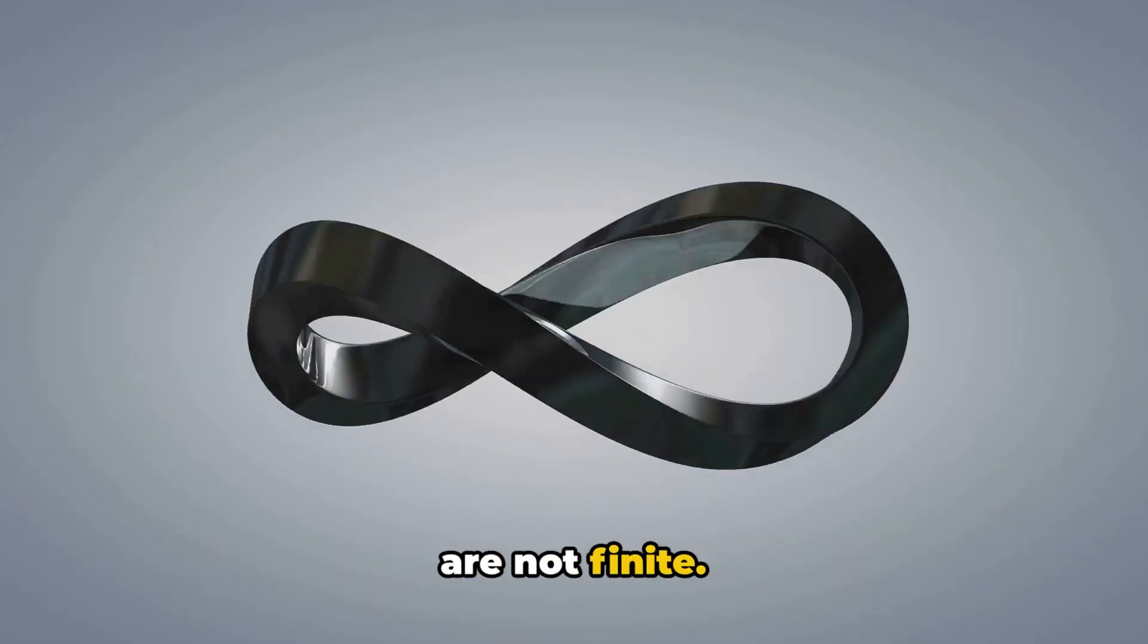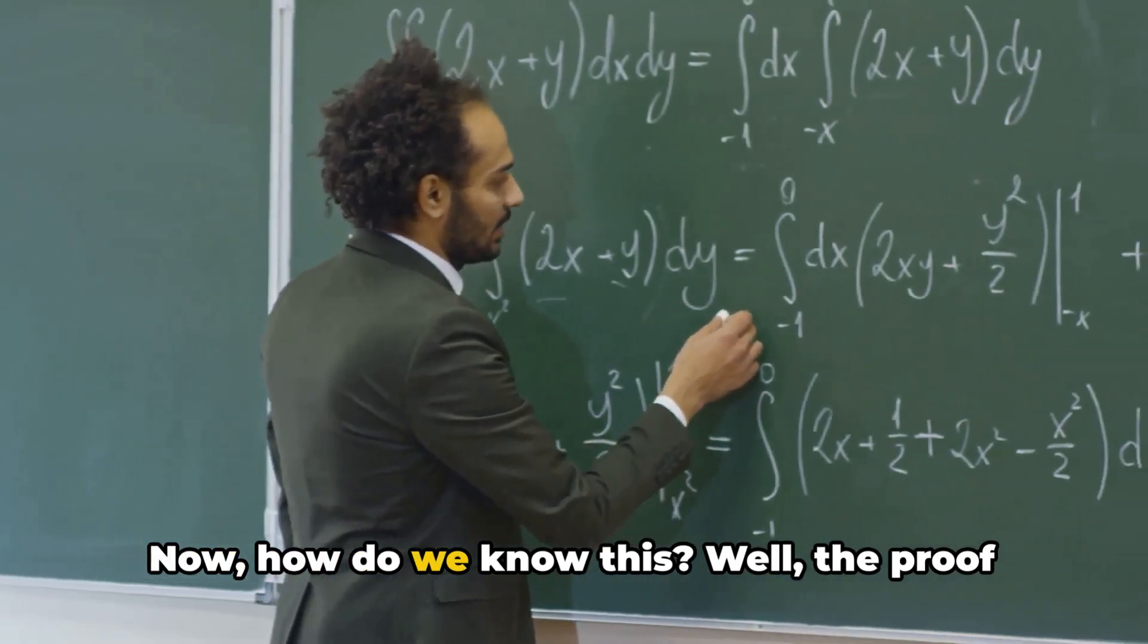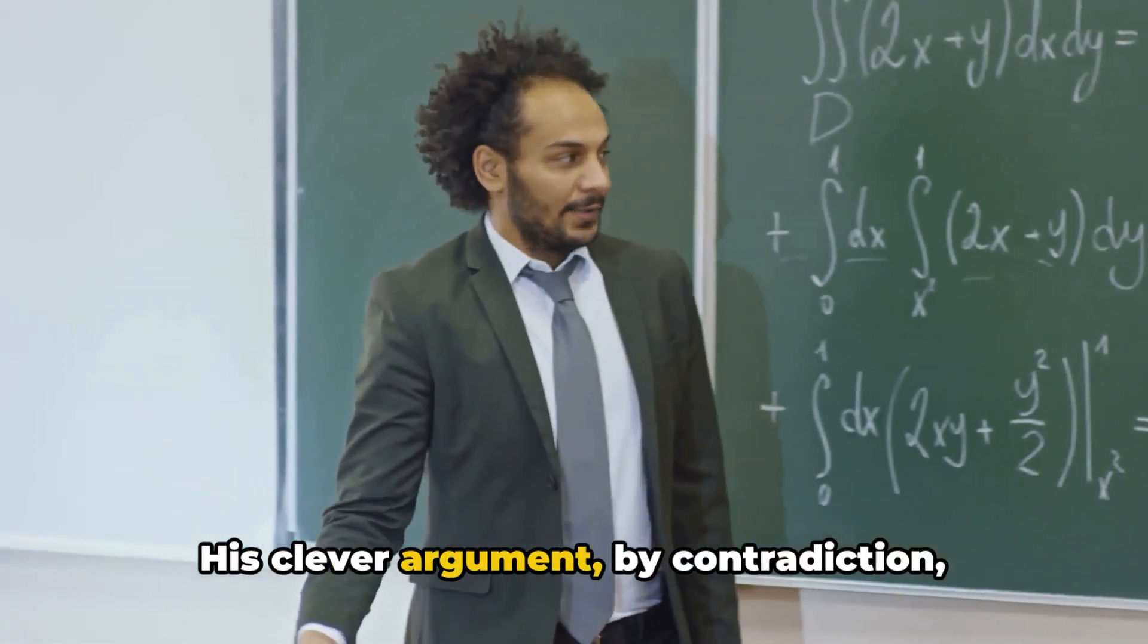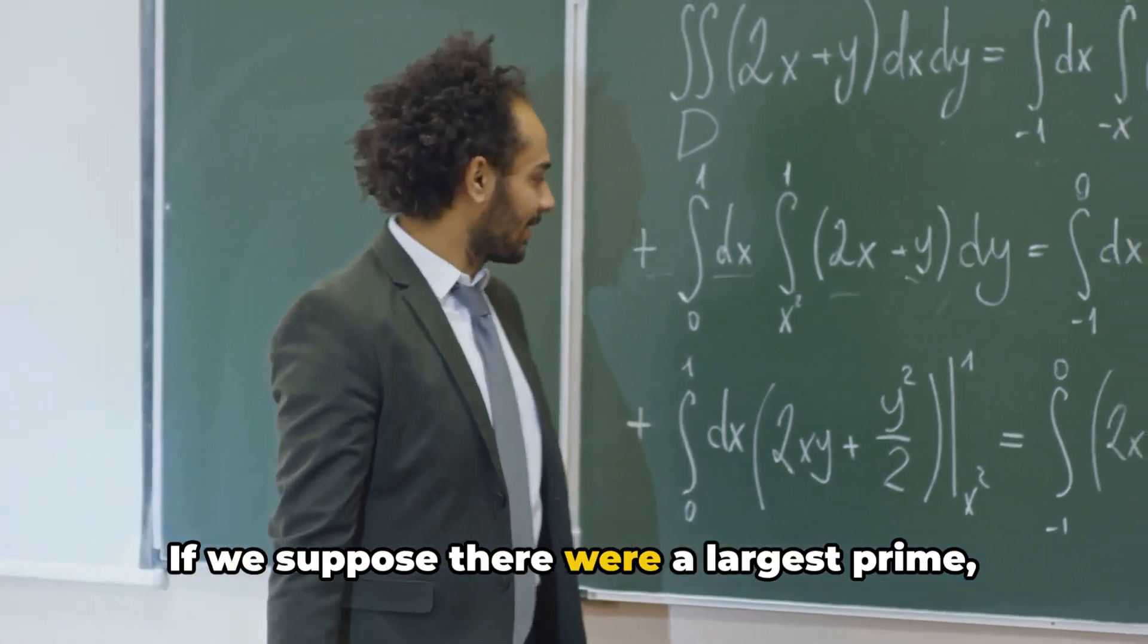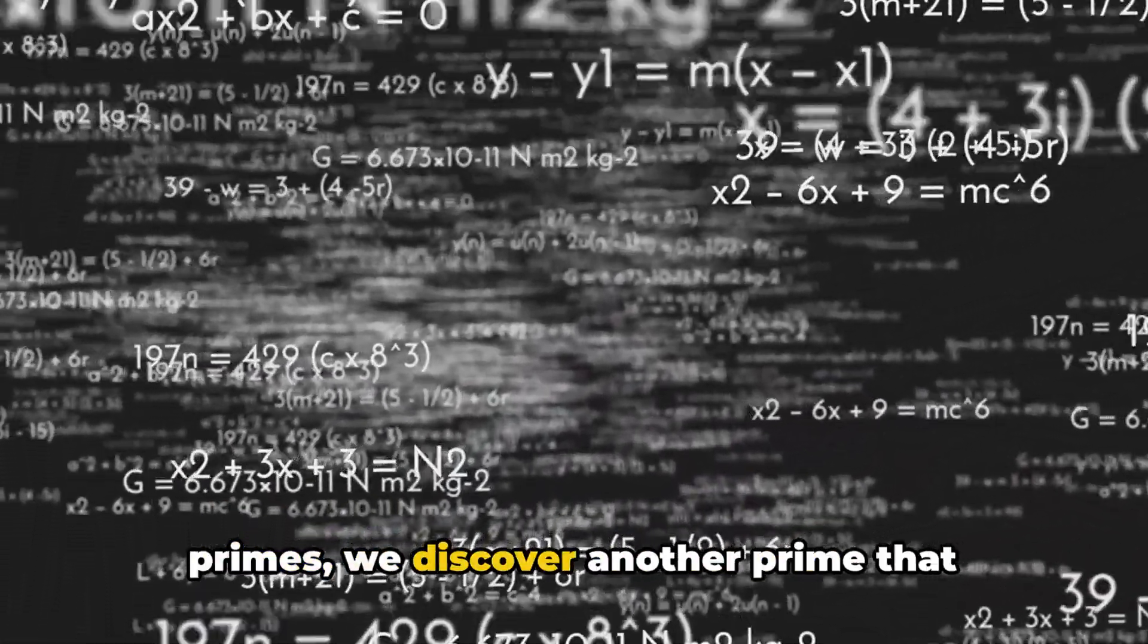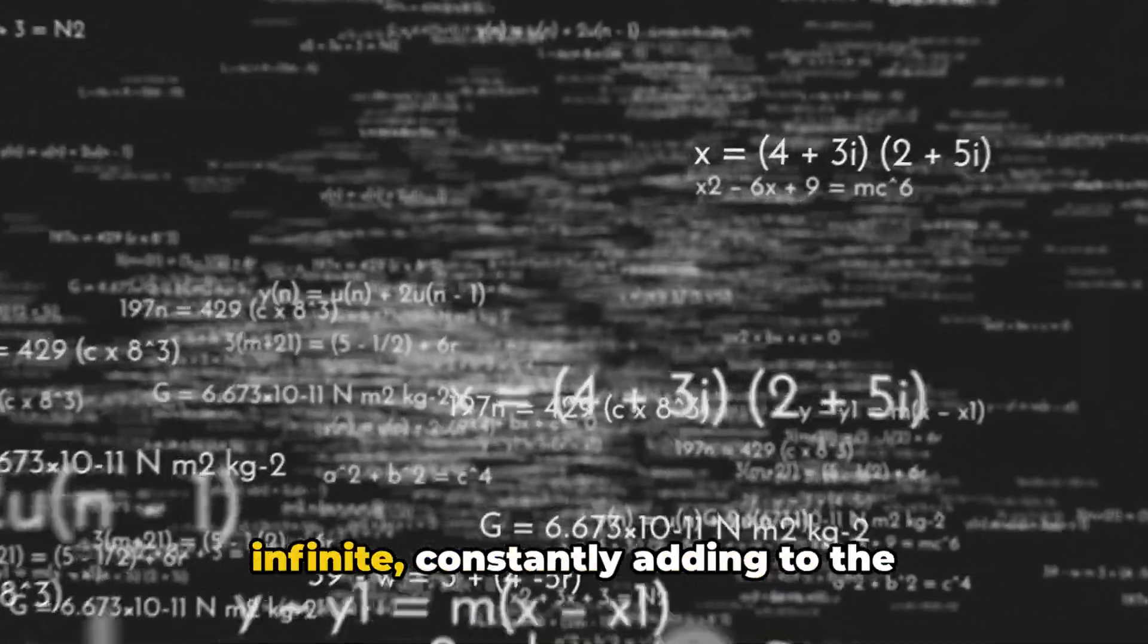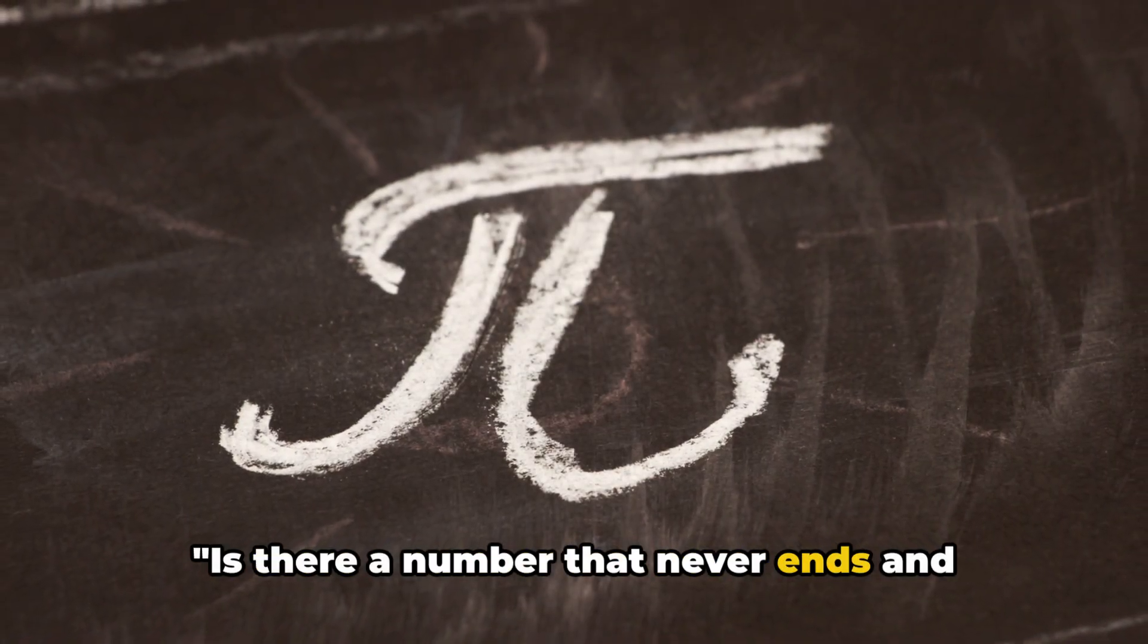These special numbers are not finite. Yes, you heard it right. There are infinitely many prime numbers. Now, how do we know this? Well, the proof is attributed to the ancient Greek mathematician Euclid over 2,000 years ago. His clever argument by contradiction established that the primes are limitless. If we suppose there were a largest prime and construct a number from all known primes, we discover another prime that wasn't in our original list. And voila, the contradiction. Primes are infinite, constantly adding to the tapestry of mathematics.